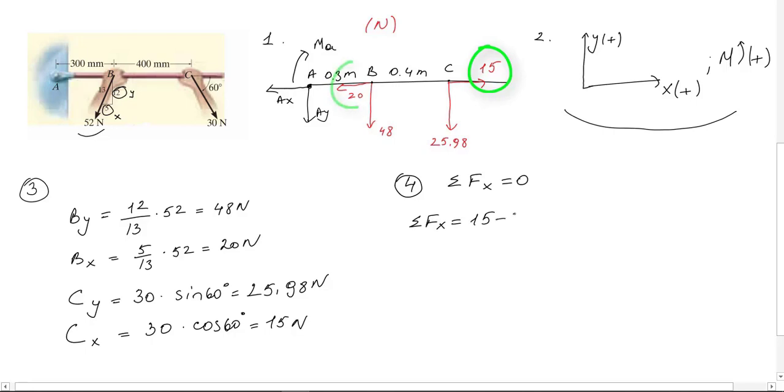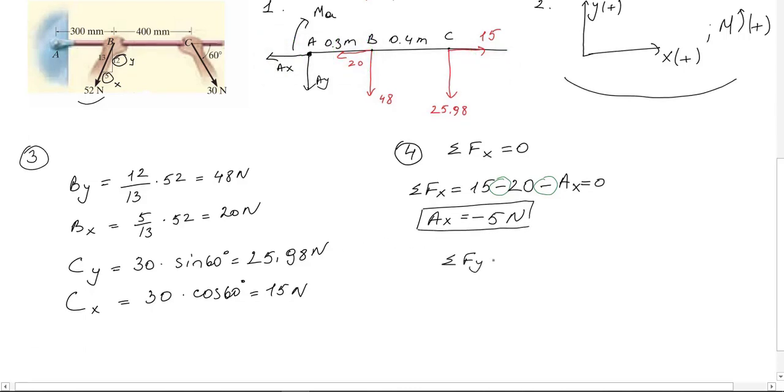From left to right we have positive 15 newton because it is rightwards, negative 20 newton and negative Ax as they both point left towards. From this equation I find that Ax is equal to minus 5 newtons.